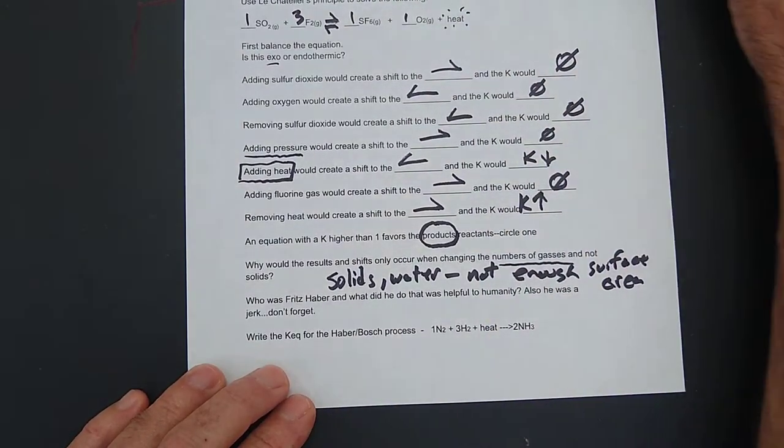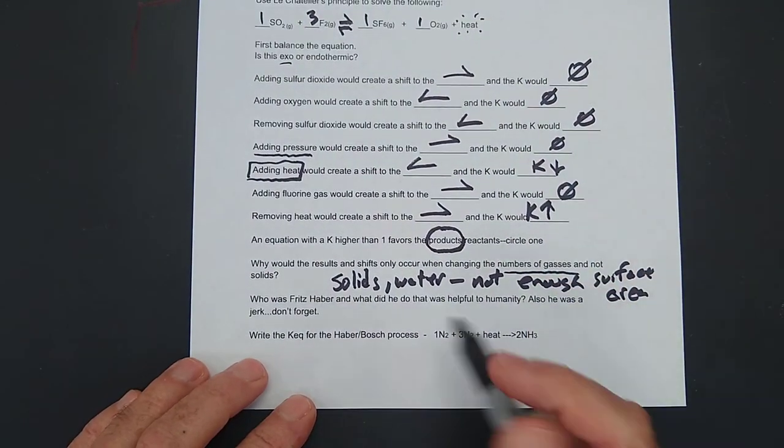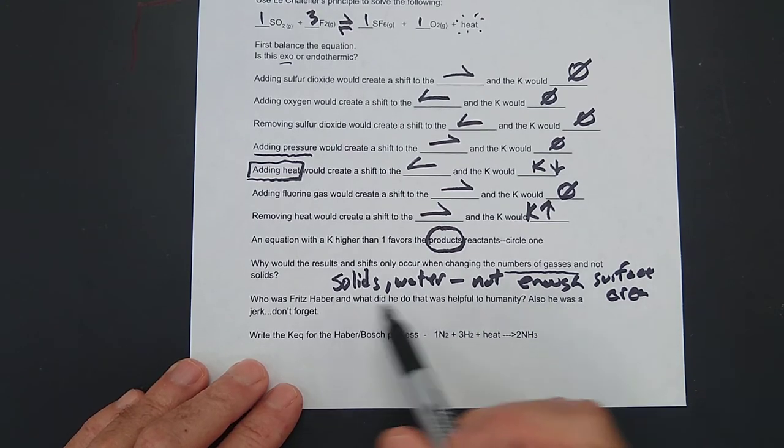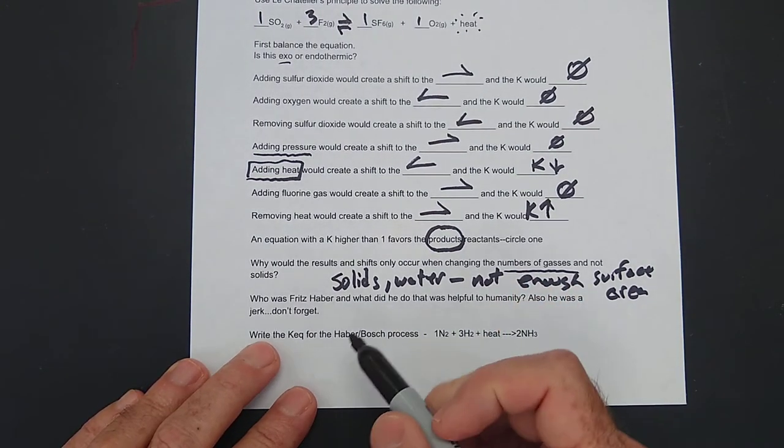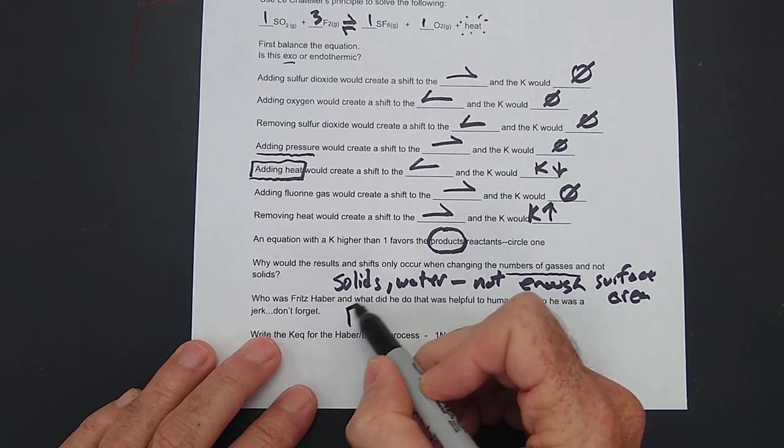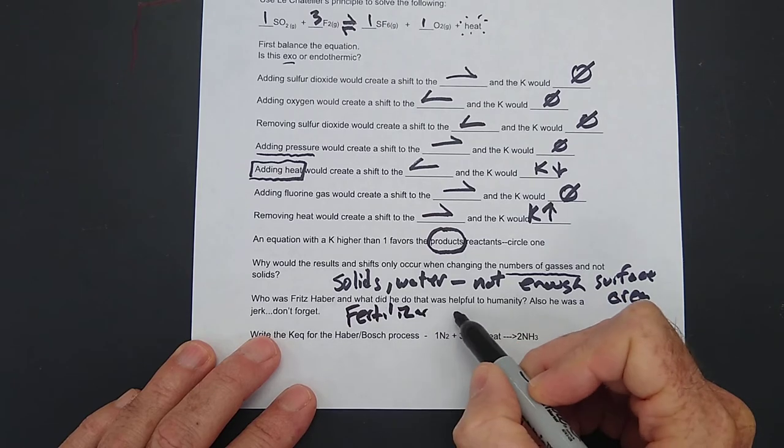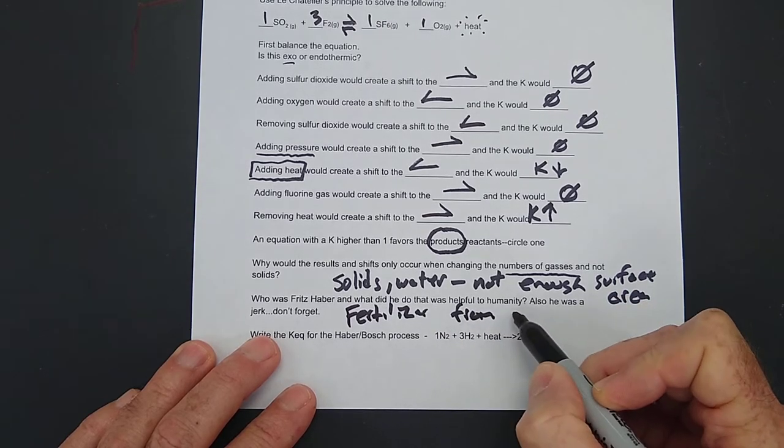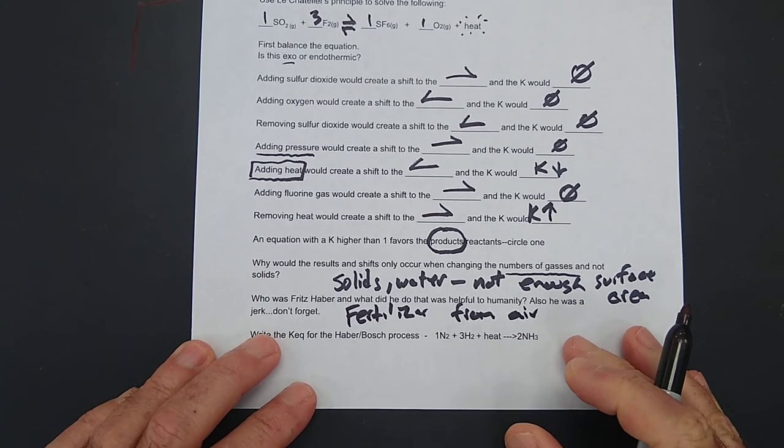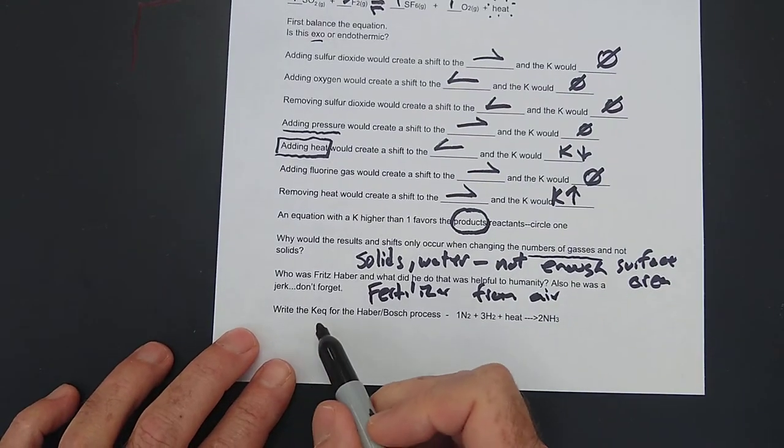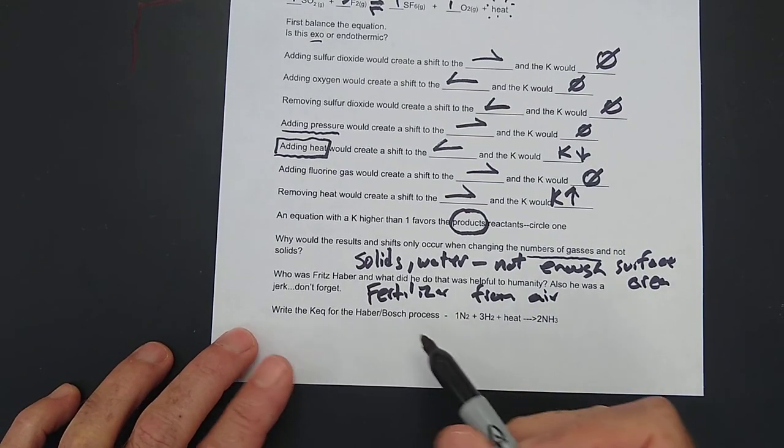Who is or was, who was Fritz Haber? And what did he do that was helpful to humanity? Also, he was a jerk. Don't forget. He figured out how to get fertilizer from the air. But remember, he figured that out while trying to murder people. So that's a bummer.